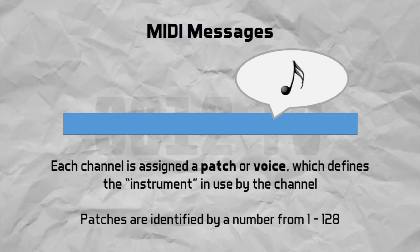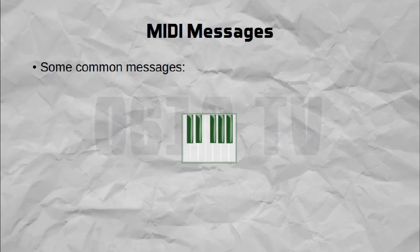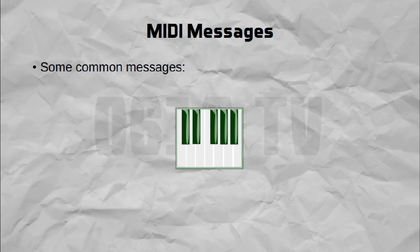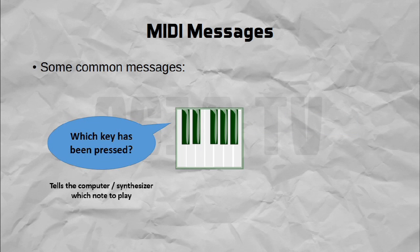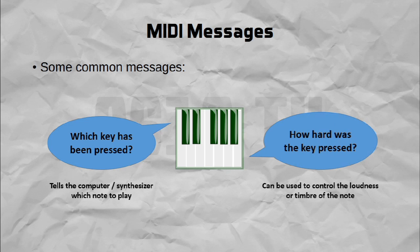For each channel, you can actually choose one of 128 patches. What a patch is, is basically just an instrument. So every patch from 1 to 128 represents a different instrument. When you're playing an instrument, the most important piece of information to send is of course which keyboard key was actually pressed. On top of this, another piece of information that tends to be transferred a lot is the actual velocity or pressure of the key pressed.